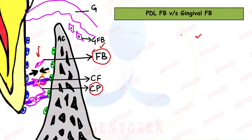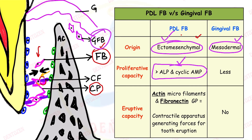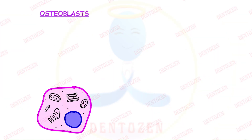PDL fibroblasts differ from gingival fibroblasts in several ways. Their origin is ectomesenchymal whereas gingival fibroblasts are mesodermal. Proliferative capacity of PDL fibroblasts is high; they express high alkaline phosphatase and cyclic AMP, whereas it is less for gingival fibroblasts. PDL fibroblasts have actin microfilaments and fibronectin glycoprotein, forming a contractile apparatus for tooth eruption — gingival fibroblasts lack this eruptive capacity.